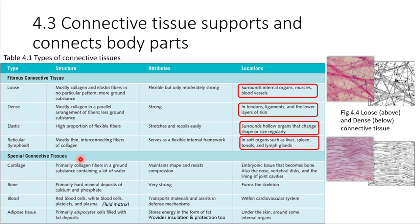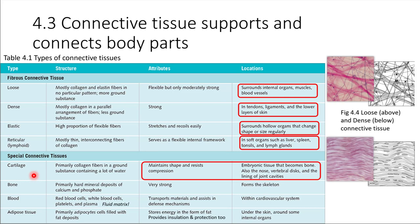Moving on to the special connective tissues — the general principles still apply: cells embedded in an extracellular matrix. Cartilage is a substance that helps to maintain shape and resist compression. Some body structures are actually made of cartilage — for example, the nose and the ears maintain their shape due to cartilage. Cartilage also plays a very important role in skeletal formation: babies start out with a skeleton made of cartilage, and that cartilage guides the formation of the bones.